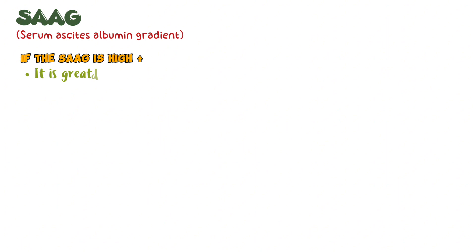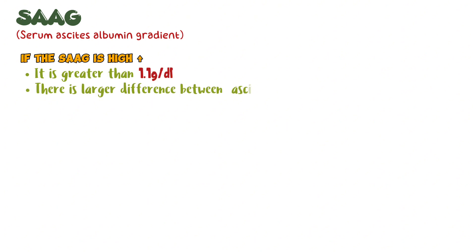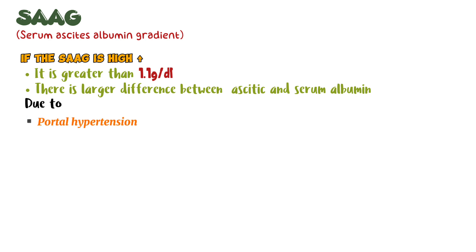If the SAAG is high — meaning greater than 1.1 gram per deciliter — there is a larger difference between ascitic and serum albumin, and this indicates portal hypertension. It can also be due to cirrhosis, heart failure, or Budd-Chiari syndrome.